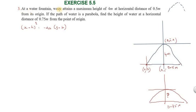Hi students, greetings from Success Education Academics. This is exercise 5.5, question number 3. At a water fountain, water attains a maximum height of 4 meters at a horizontal distance of 0.5 meters from its origin.